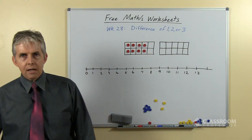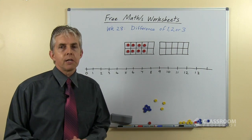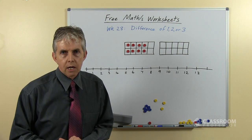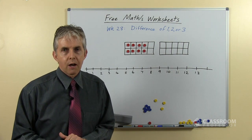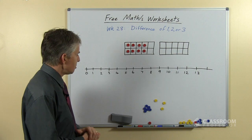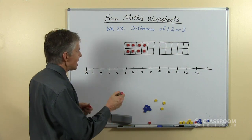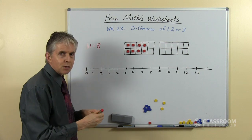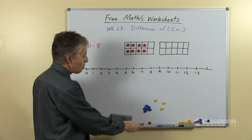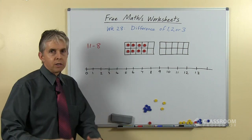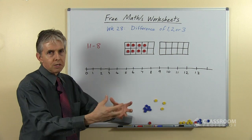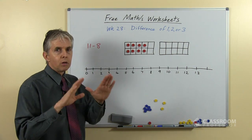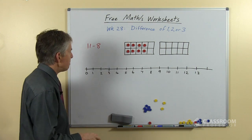This is a fairly challenging strategy for young students — older ones won't have trouble, we would certainly hope — but the younger ones may have some difficulty with this. So let's start with the question 11 minus 8. I'm saying minus rather than take away deliberately, because we're not taking away. We're looking at the two numbers and comparing them.